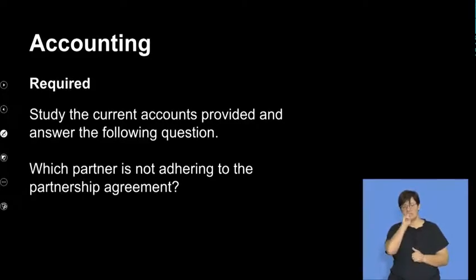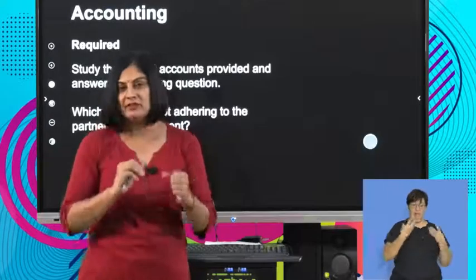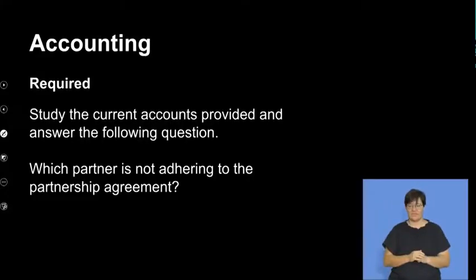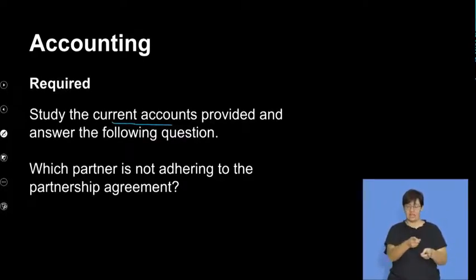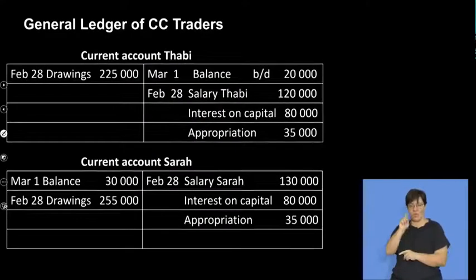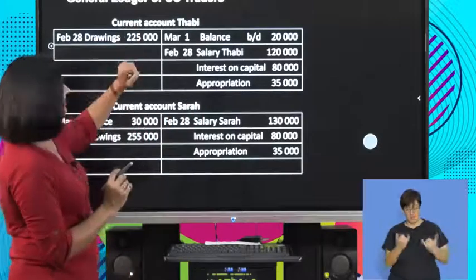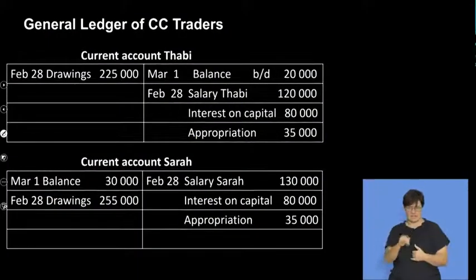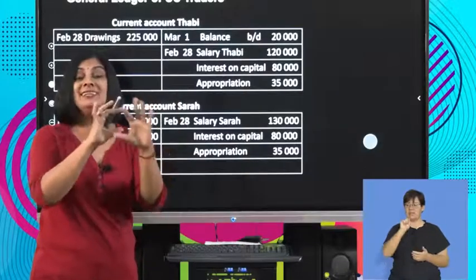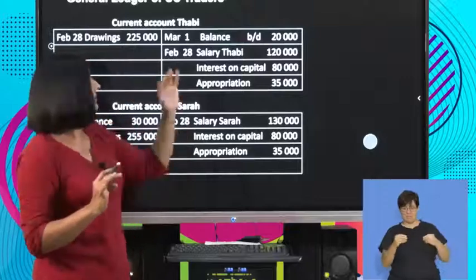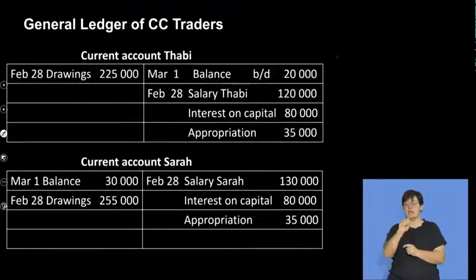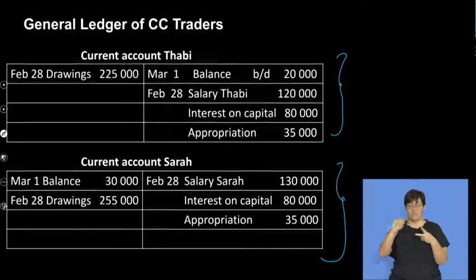Let's move on to a bit of analysis. We are asked to study the current accounts provided and answer the following questions. We're moving away from Candice and Craig — we're now given the current accounts of Tubby and Sarah. Think of this as a completely different business with two partners: Tubby and Sarah.